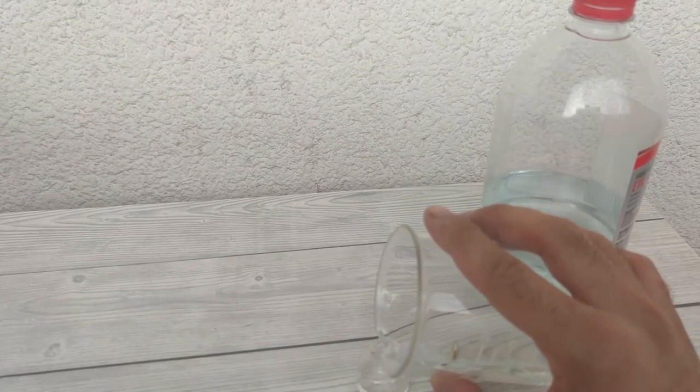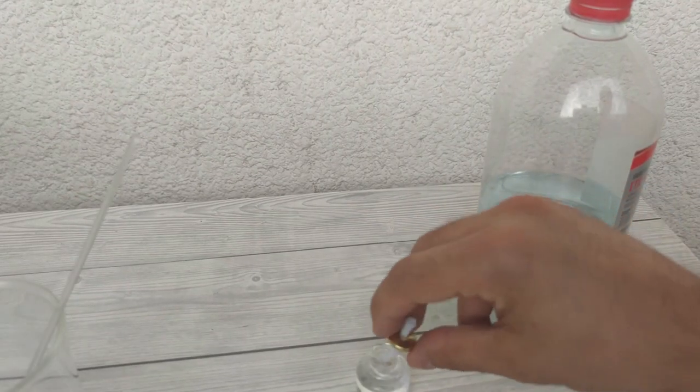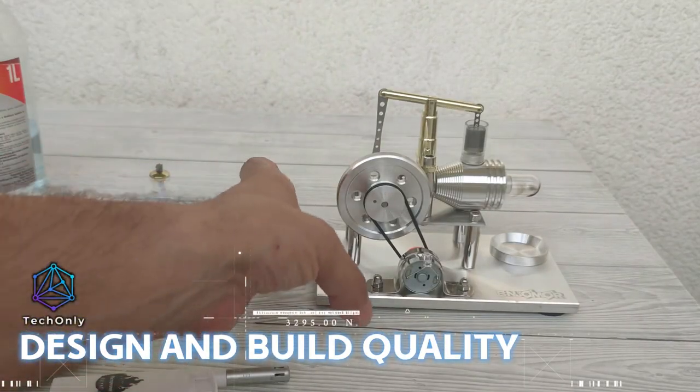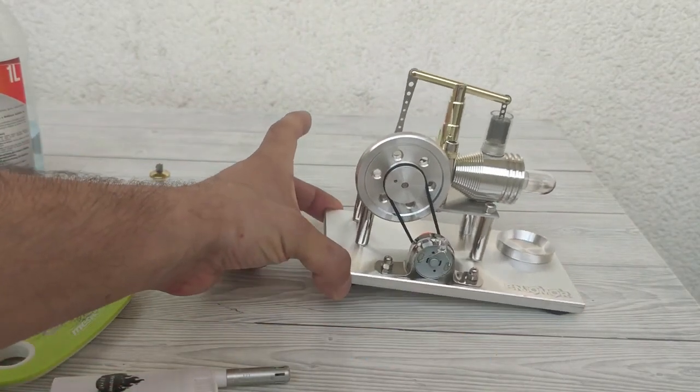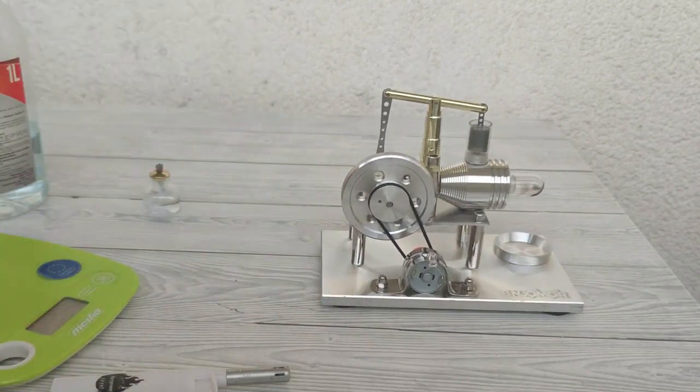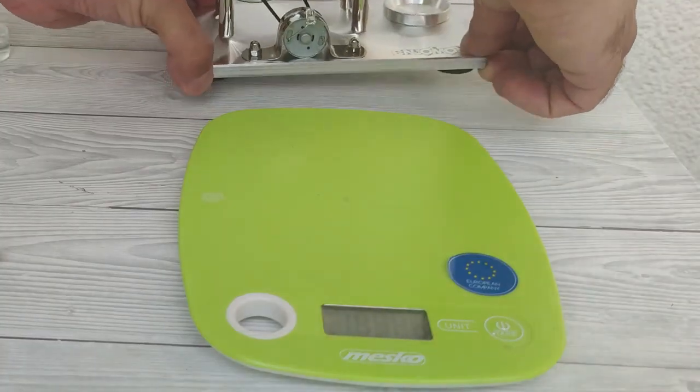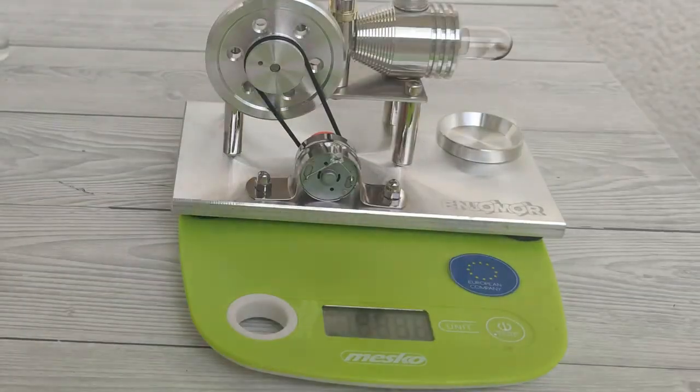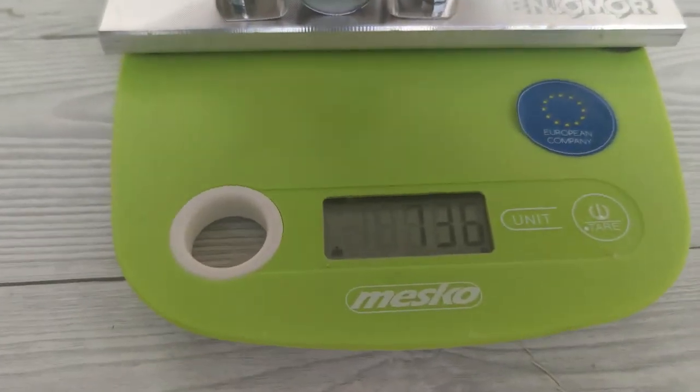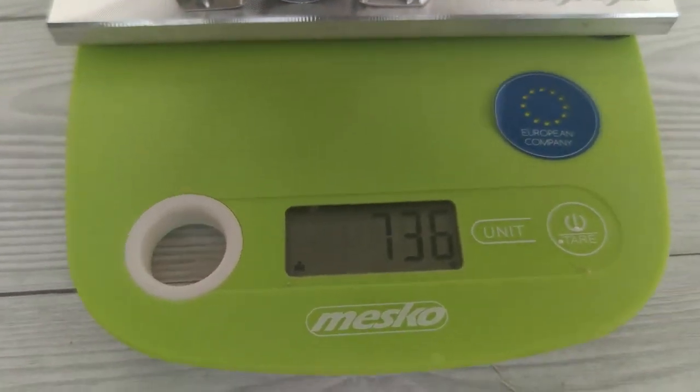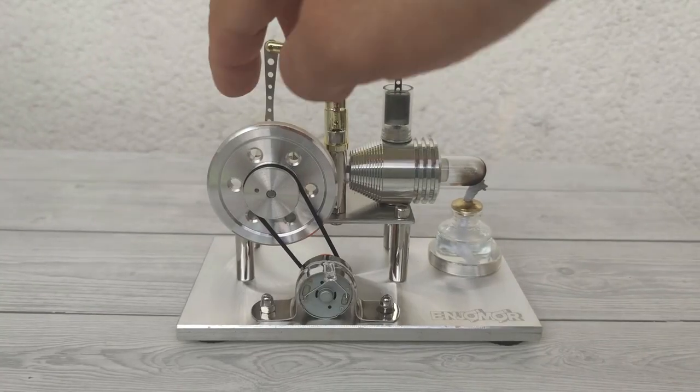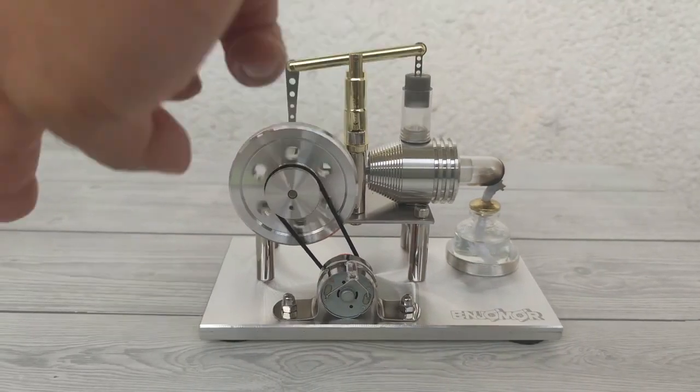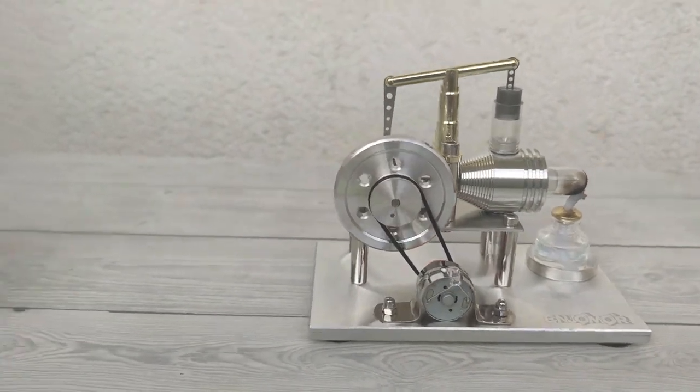We will begin by examining the design and build quality of the engine. The first thing that I notice is the weight, which is not so small. Some models use wooden plates, but this one is made from steel. That's why the weight is 736 grams or 1.62 pounds. The reason why I like this sturdy design is that the engine will not move because of vibrations when working.